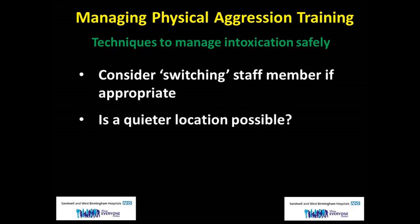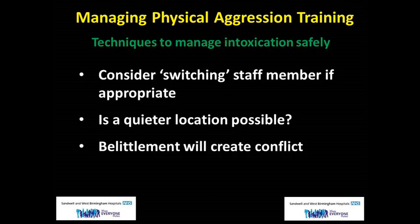Where a patient is agitated and has a dislike for a particular staff member, continuing to expose the staff member and the patient to that scenario is likely to produce conflict. Wherever possible, we should look to try and put the person who is intoxicated in an area where there is a low level of external stimuli. A strong cause of agitation for a person who is intoxicated is belittlement or being provoked — once our professional standards slip, this is highly likely to produce aggression in an already agitated drunk person.